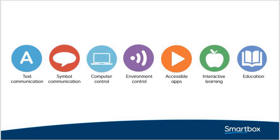When we talk about Grid 3, there are different areas and the users you're working with may fall into one or several categories. The first area is text communication. We have symbol communication, computer control, environment control — where people do things like turning lights on and off or controlling their televisions — accessible apps for things like email and Skype, and interactive learning as a way to motivate learners and use it for educational purposes. I'm going to take you into the software now, set it up, look at some grid sets, and learn about basic editing.